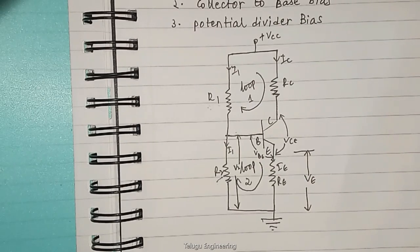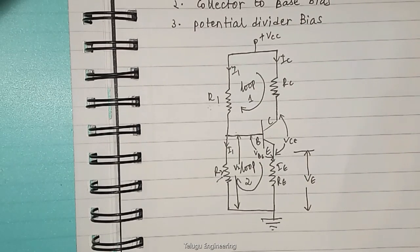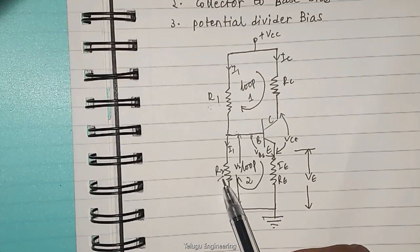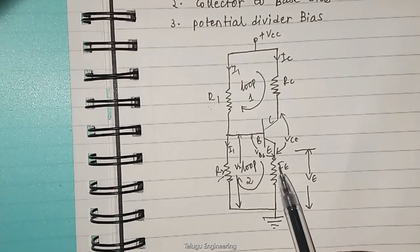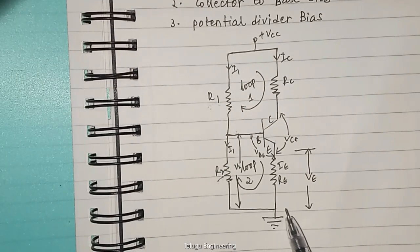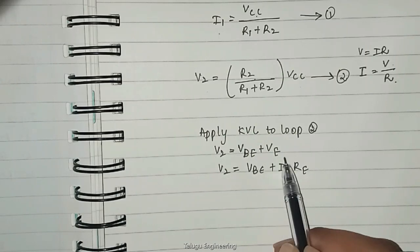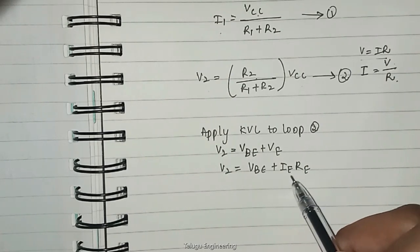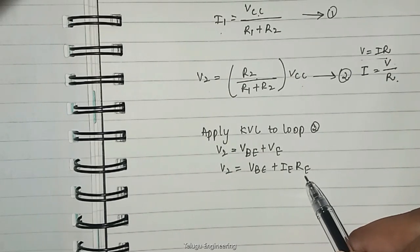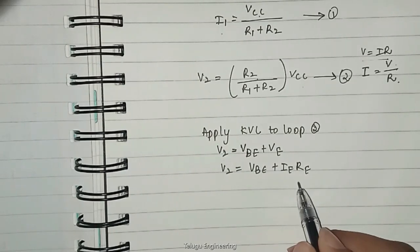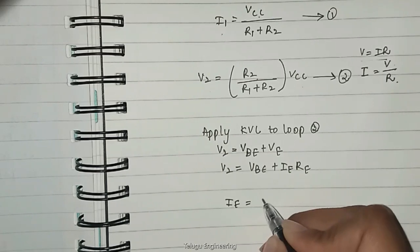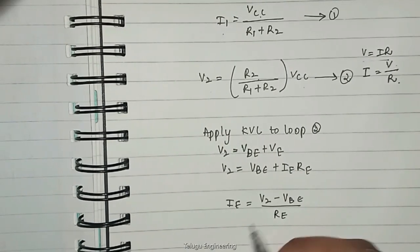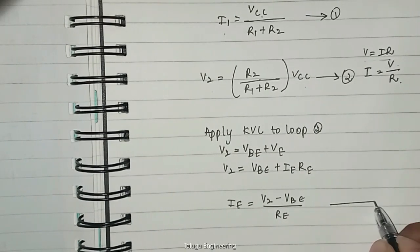Next, applying KVL to loop two, this part. So now V2, the voltage across resistor R2, is given by VBE plus VE. V2 equals VBE plus VE. And this VE according to Ohm's law is given by IE, current across the emitter, times resistance across the emitter. Now from this equation, we can get IE equals V2 minus VBE divided by RE. Let this be equation number three.